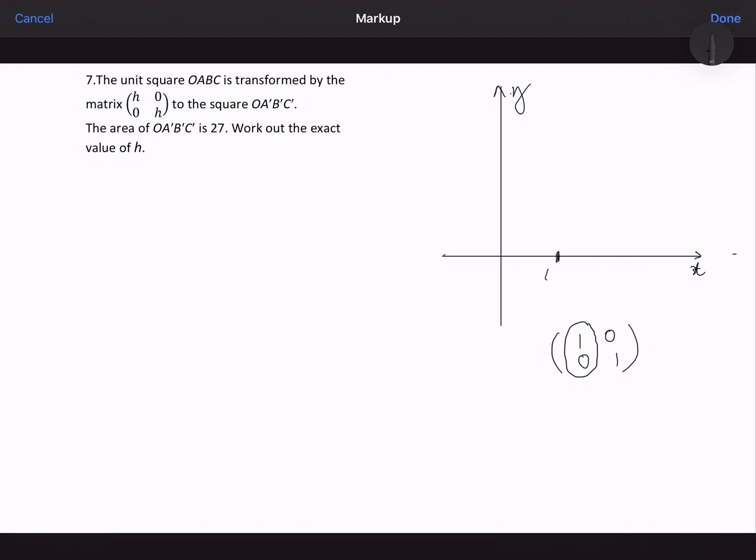That's 1, 0. And the other point is here, so 0, 1. That's to complete my unit square. So this unit square has an area of 1 times 1, which is 1.